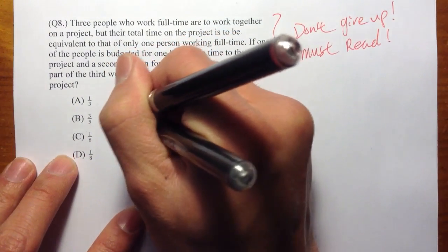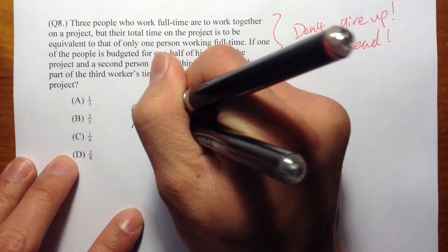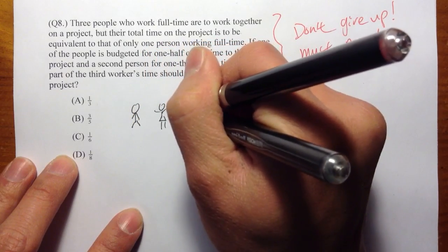So first of all, I know I have three people. Let me draw one, and then a second person, and then a third person.